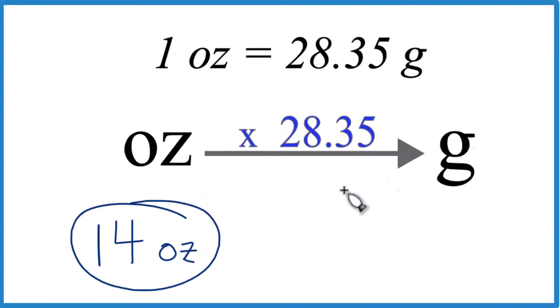If you need to convert 14 ounces to grams, here's how you do it. One ounce equals 28.35 grams.